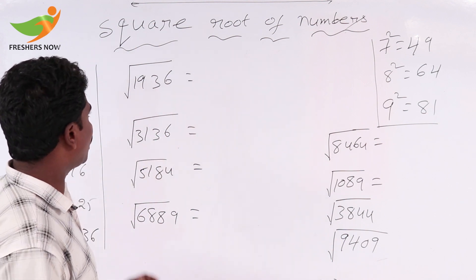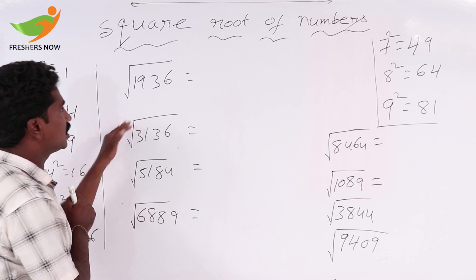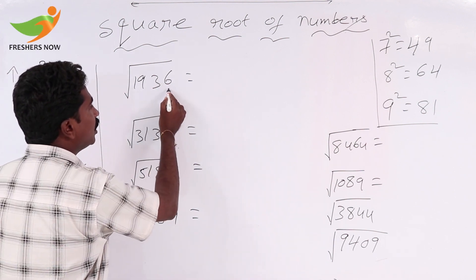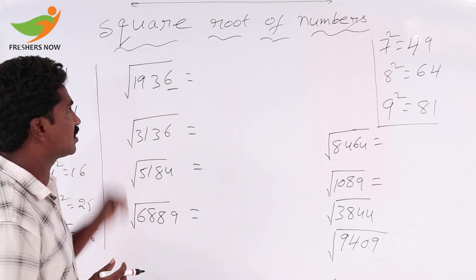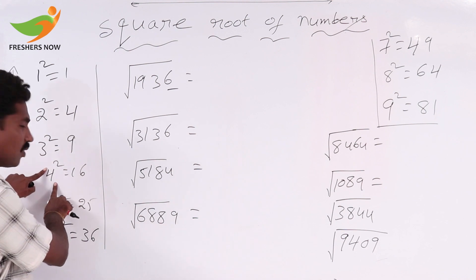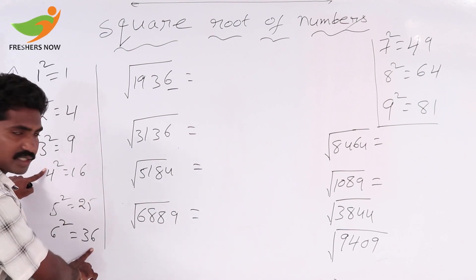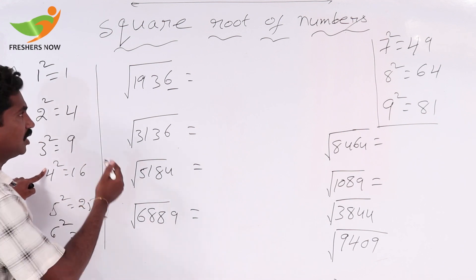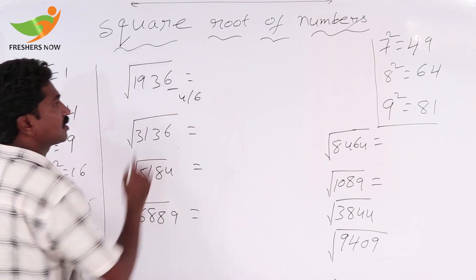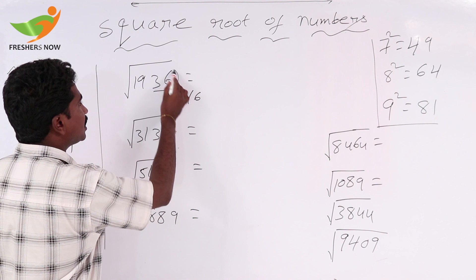Now we discuss the square root of 1936. The units place value is 6. By squaring: 4 squared is 16, and 6 squared is 36. So the units place value is either 4 or 6.